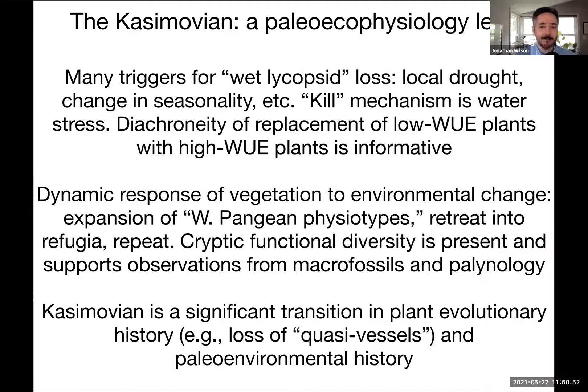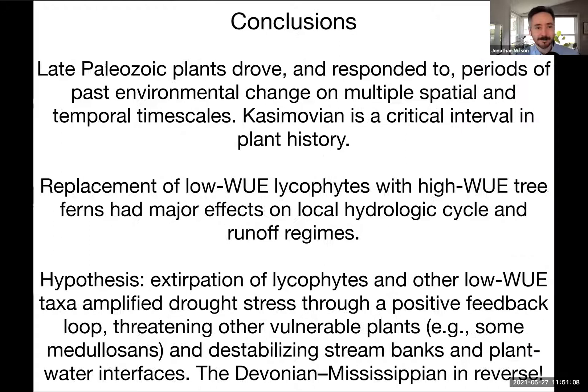From an evolutionary perspective, this is a really pivotal time in plant evolutionary history. To the best of our current resolution, this period represents a loss of one particular ecophysiological strategy that isn't revisited on a global scale until the angiosperms arise in the mid-Mesozoic. To sum up: as was said this morning, this is a critical interval in plant history. These floral transitions had major effects on local hydrologic cycles and runoff regimes. Rather than thinking of this event as a bolide impact, a physiological lens suggests that environmental change, plant community change, and positive feedbacks have been amplifying these changes. I'd like to toss out a hypothesis that the broader Casamovian transition is a reverse of the greening up we see in the Devonian and Mississippian — a destabilization of high-transpiration ecosystems rather than an expansion of vegetation onto the land.